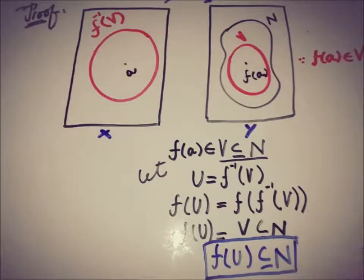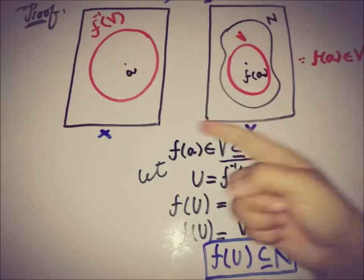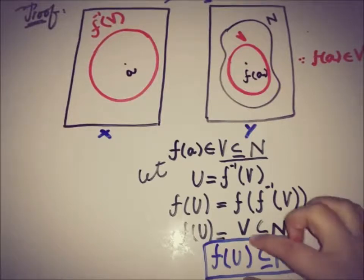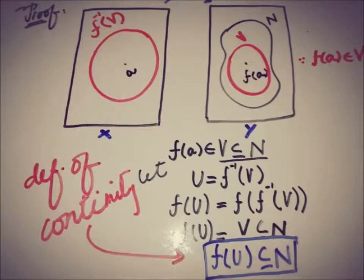This is what the definition of the continuity is: that for each neighborhood of f(a) there must exist an open set that contains the point a such that f(U) is a subset of that open neighborhood. Here the open neighborhood is N and the open set is f(U).